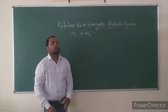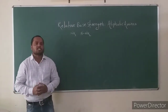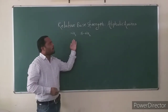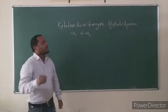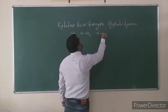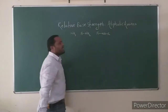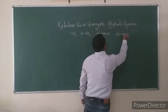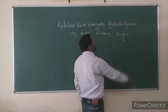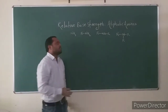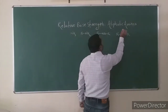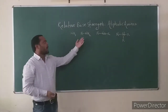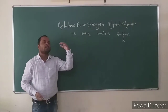In today's lecture we discuss the relative base strength for aliphatic amines. As we go from ammonia to primary amine, primary to secondary amine, and secondary to tertiary amine: in tertiary amine, the nitrogen atom is attached to three different alkyl groups with no hydrogen on nitrogen. In secondary amine, nitrogen is attached to two alkyl groups, and in primary amine, nitrogen has only one alkyl group.